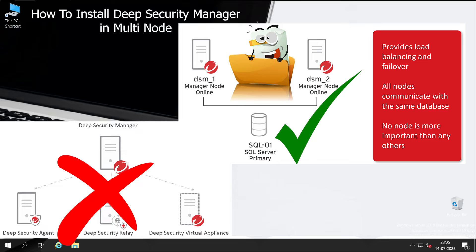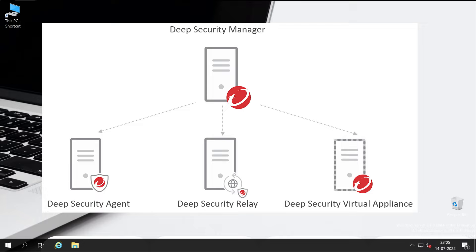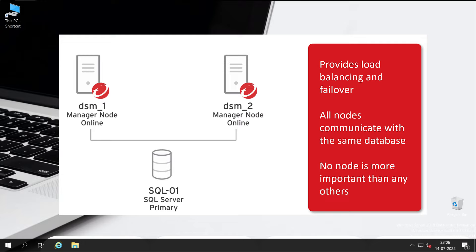Multi-node is going to help you a lot in terms of scalability and performance — it can handle the maximum load of your Deep Security agents. In a regular installation, you have one single database server, which could be on the same server where Deep Security Manager is installed or on a different server. But when you increase the number of agents, server performance gets degraded. If you add one more Deep Security Manager server, your performance will be top-notch and all activity will be done faster.